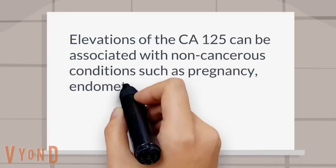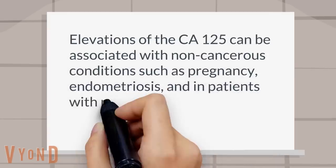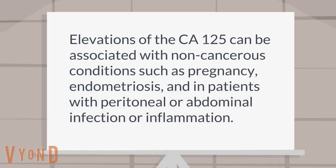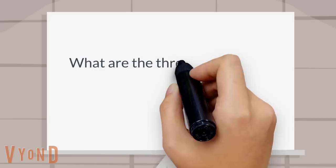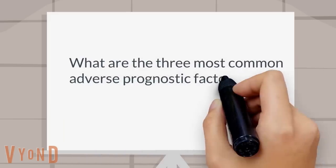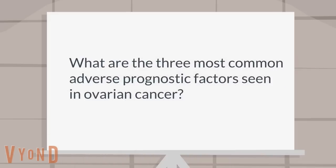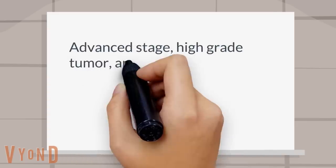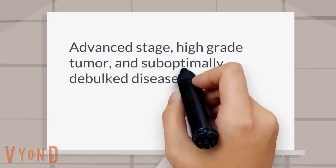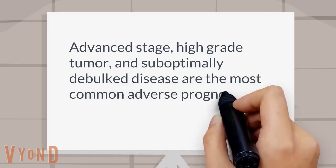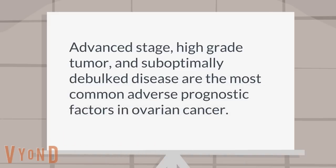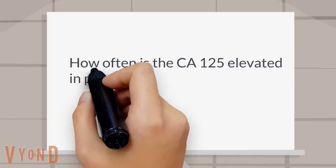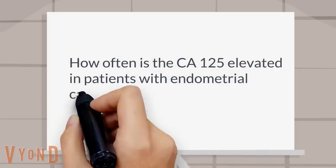Can the CA-125 be elevated in patients without cancer? Elevations of the CA-125 can be associated with non-cancerous conditions such as pregnancy, endometriosis, and in patients with peritoneal or abdominal infection or inflammation. What are the three most common adverse prognostic factors seen in ovarian cancer? Advanced stage, high-grade tumor, and sub-optimally debulked disease are the most common adverse prognostic factors.